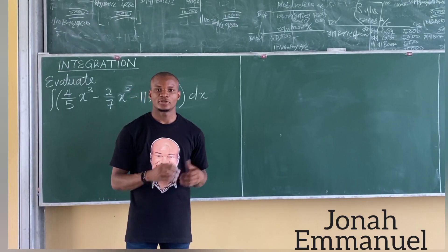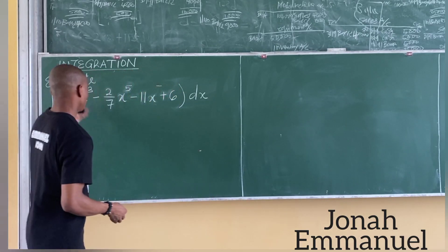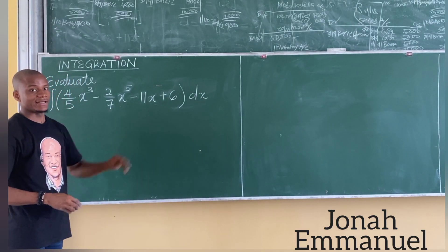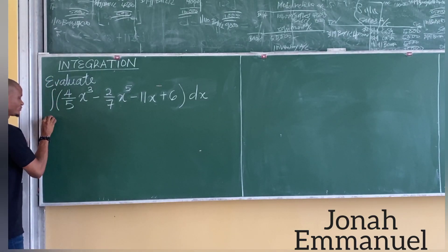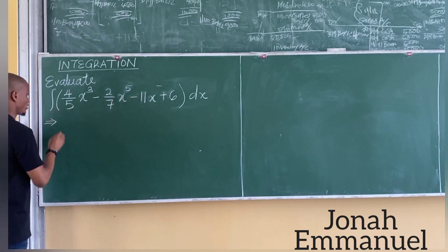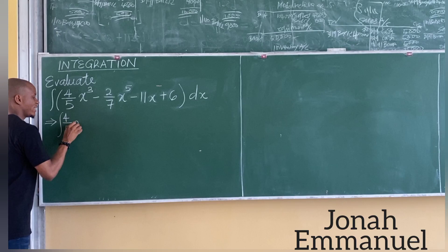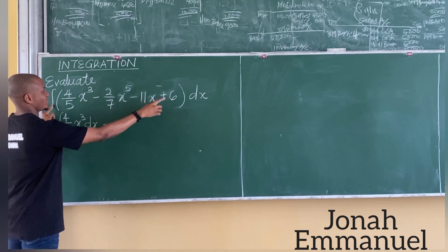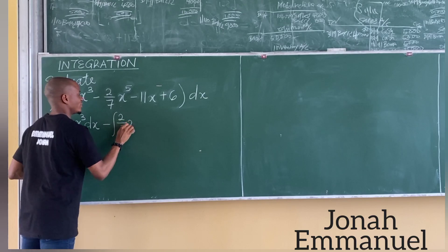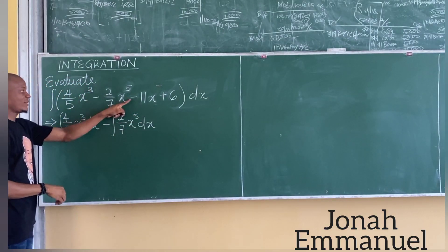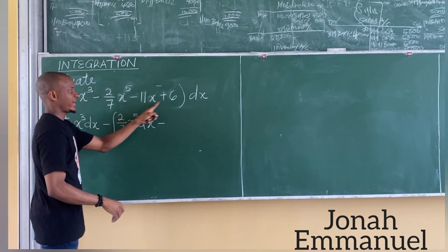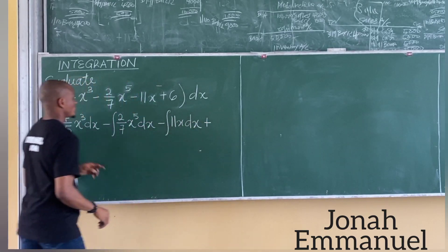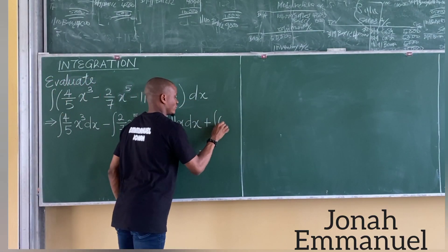Let's take a final example on the general method of integration. We are asked to evaluate another integral. As in the previous example, the first task is to use the integral sign for each term and attach the dx. So: integral of 4 over 5 x cubed dx, minus integral of 2 over 7 x to the power 5 dx, minus integral of 11x dx, plus integral of 6 dx.